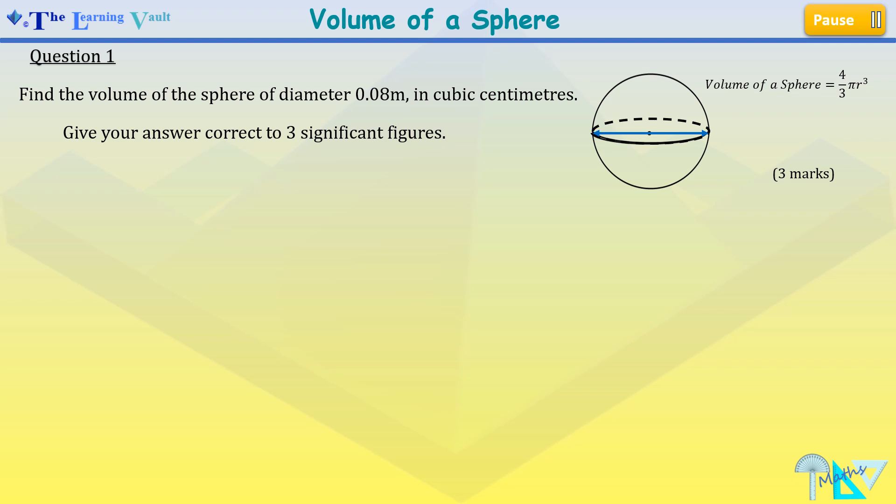Now let's see how we answer this question to gain the full three marks. Remember we're told to find the volume of the sphere of diameter 0.08 meters, but our answer should be in cubic centimeters. So we need to convert our 0.08 meters to centimeters, which will give us a diameter of 8 centimeters because 100 centimeters equals 1 meter.